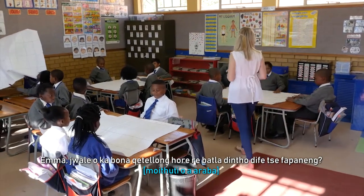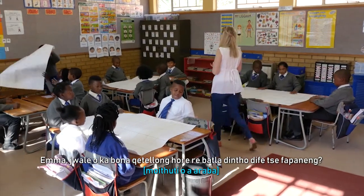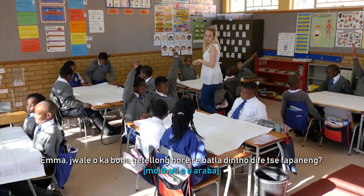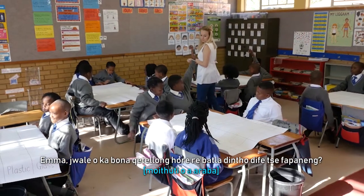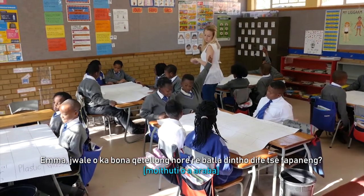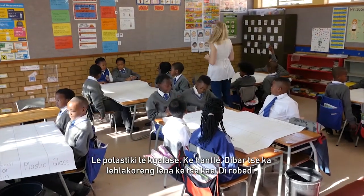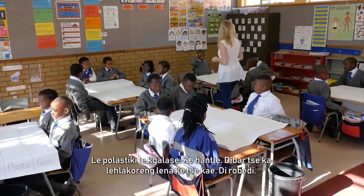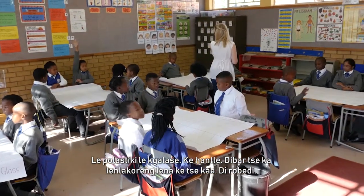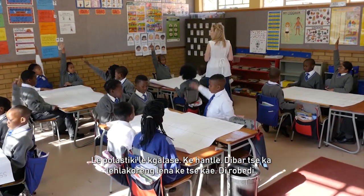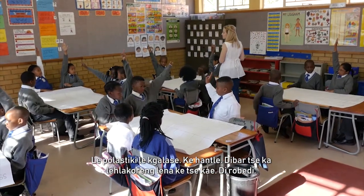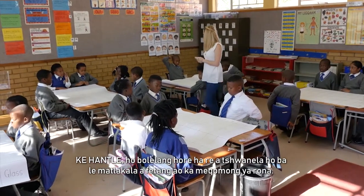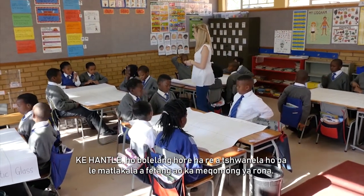Now you can see at the bottom, what different items are we looking for? Emma? Paper, metal, cotton, plastic, glass. And how many bars are there on the side? Eight. So we shouldn't have more than that in our dustbins.